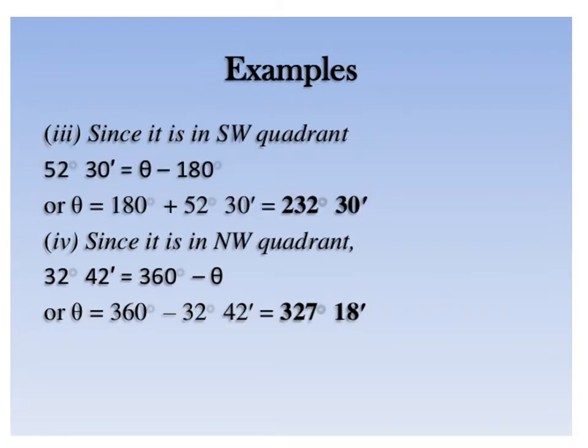For a line with reduced bearing S 50 degrees 30 minutes west, the line lies in the third quadrant, so we add 180 degrees to the reduced bearing to get the WCB. If the line lies in the fourth quadrant, we subtract the reduced bearing from 360 degrees to get the whole circle bearing.